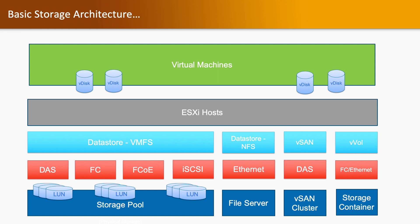Now coming to the basic storage architecture. We have gone through the storage protocols and different types of data stores, and now we look at the architecture of storage. We have basic storage on the bottom layer. On top of that, we have storage protocols such as DAS, FC, FCoE, iSCSI, Ethernet, and FC over Ethernet. VMFS data stores use DAS, FC, FCoE, and iSCSI. NFS uses Ethernet. vSAN uses DAS. And vVols uses FC and Ethernet. On top of those data stores, we have ESXi hosts, and on top of ESXi hosts, we have virtual machines. This is the complete architecture of virtual storage.